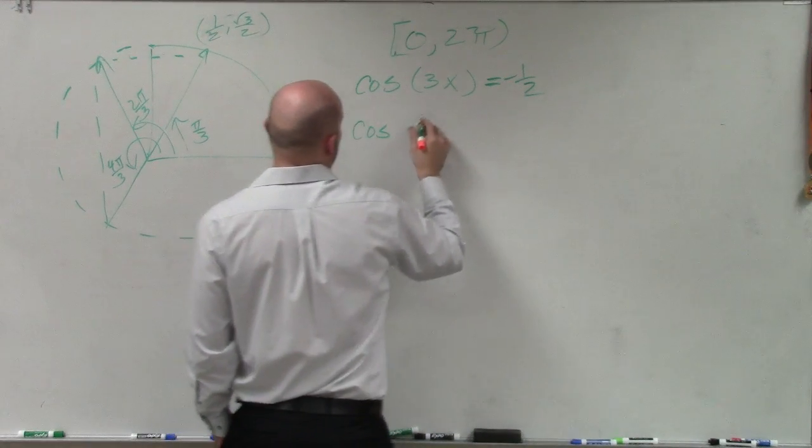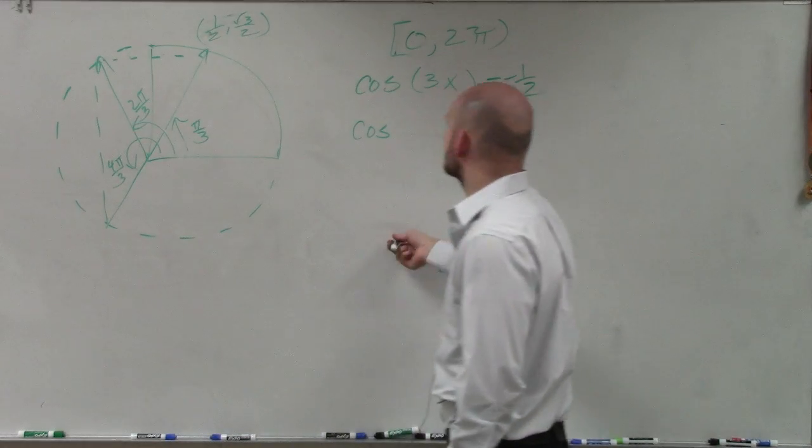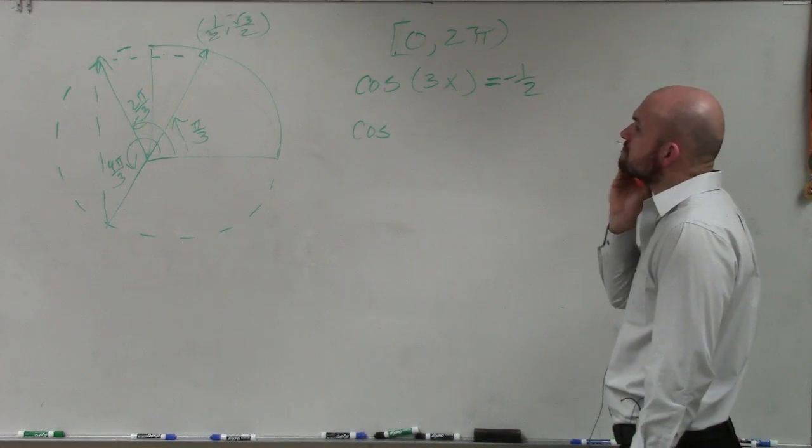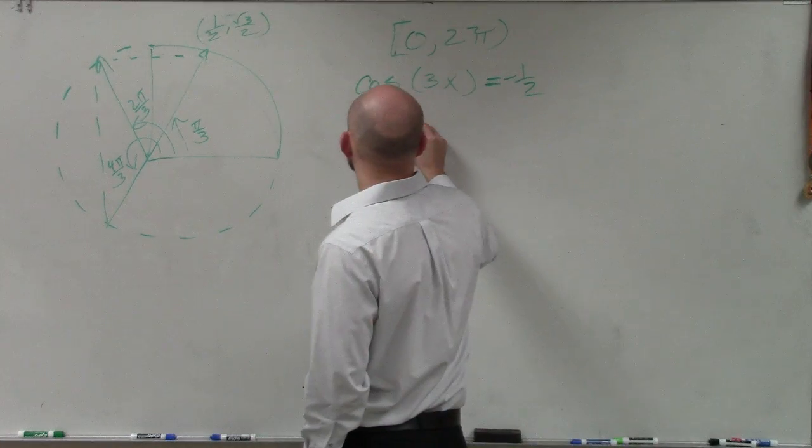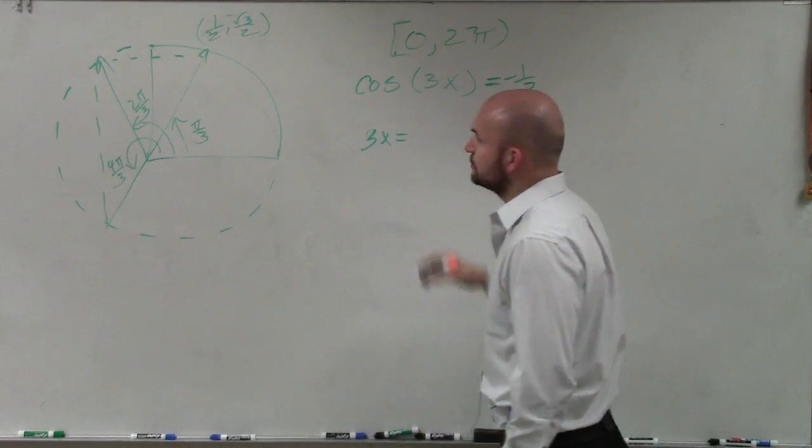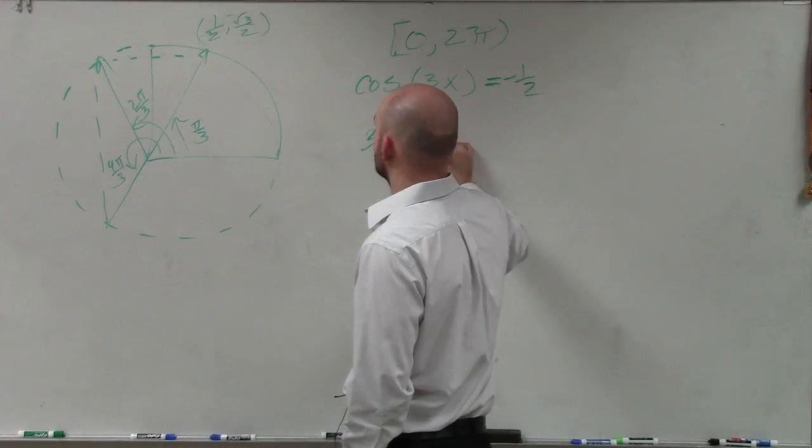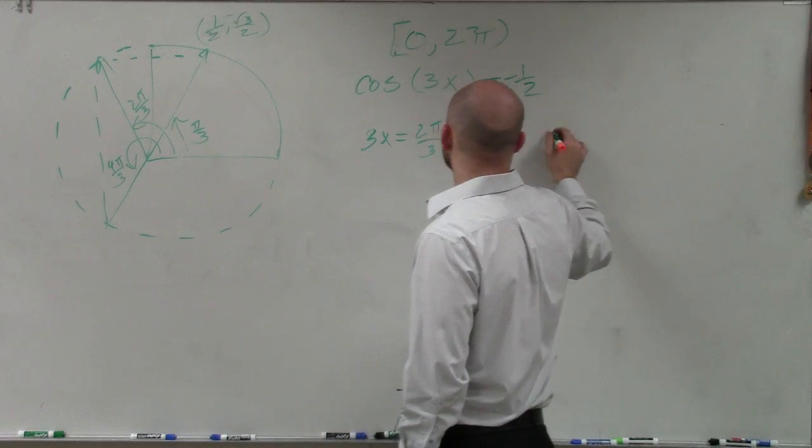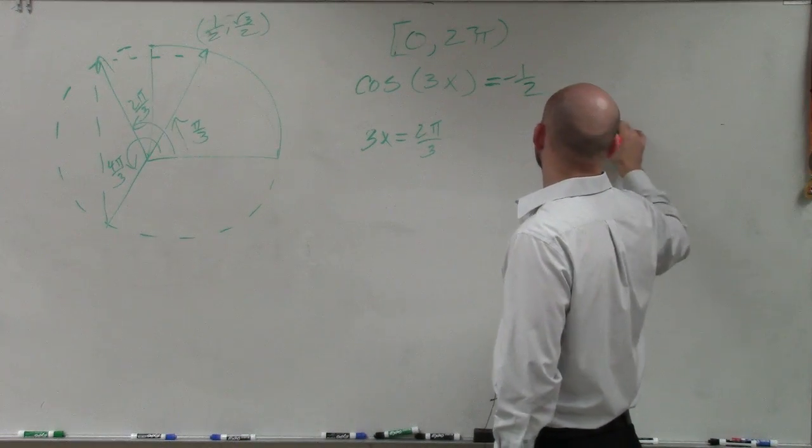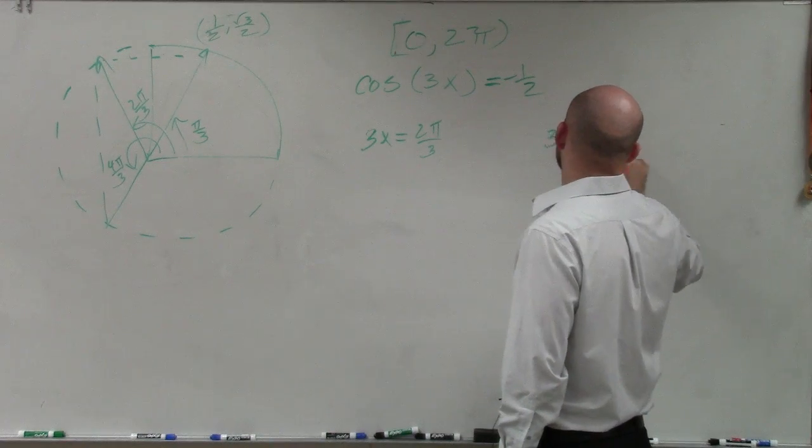So therefore, you can say cosine of 3x, or sorry, just 3x, 3x is equal to 2π over 3 and 4π over 3. Oh, this is different than what I did, I think. Okay.